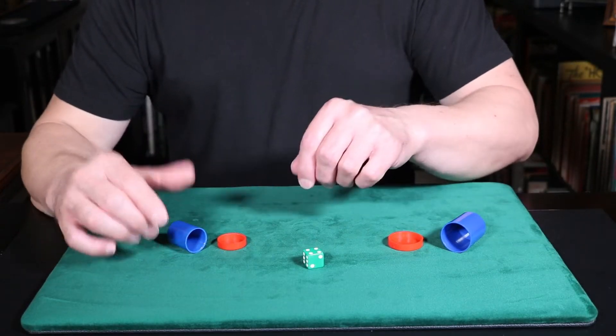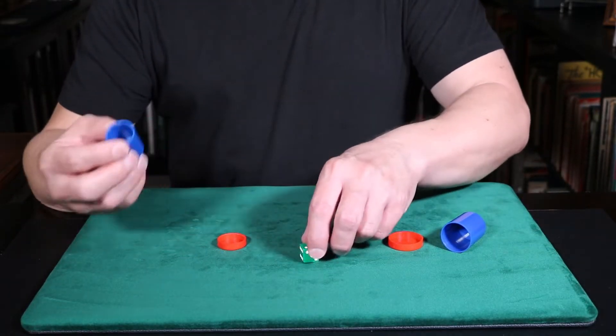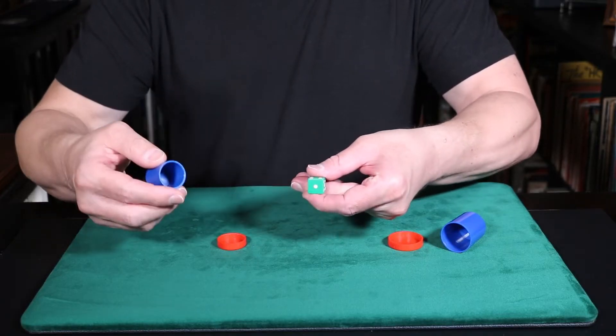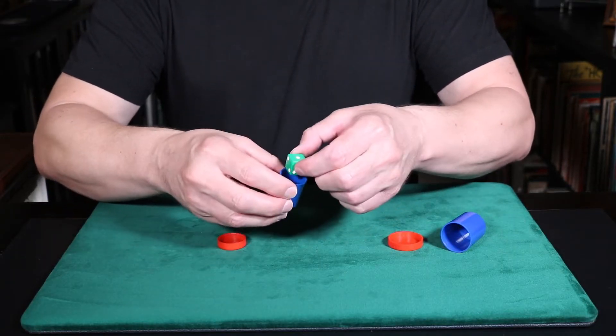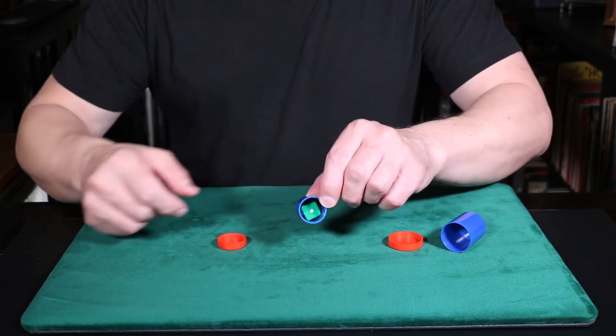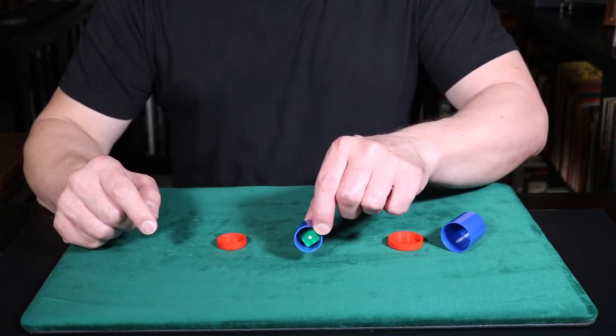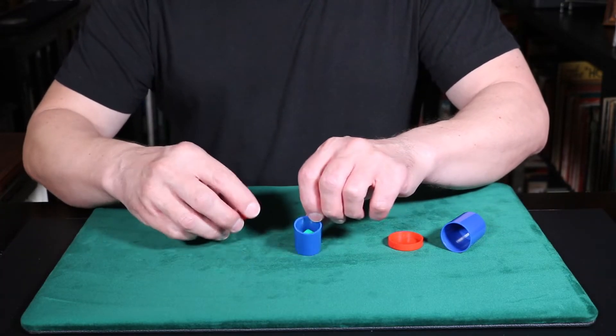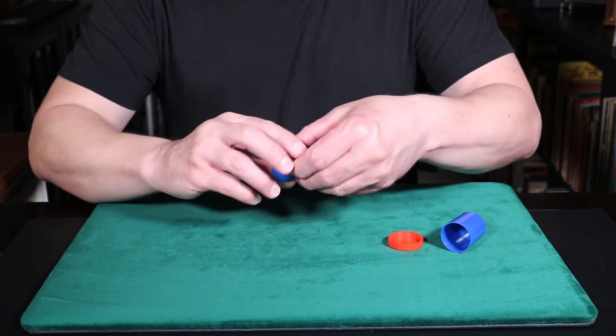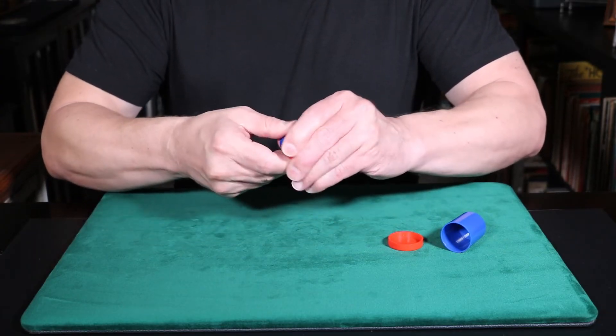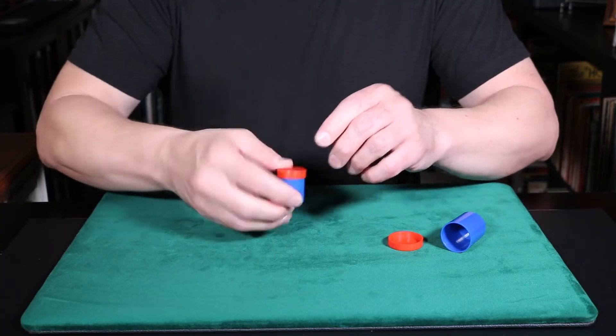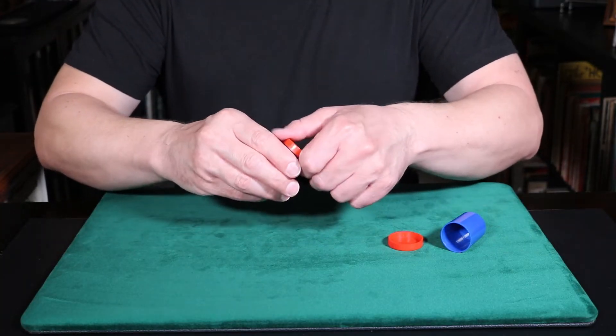Whatever that number is, I'm going to turn my back, and when I turn my back, let's say, for example, your number was one. You would place the one so it is uppermost inside the canister. Then you're going to take the red lid, put it on like this, put it all the way on, make sure it's all the way on. And that's all I'm going to ask you to do, and then tell me when you're finished.